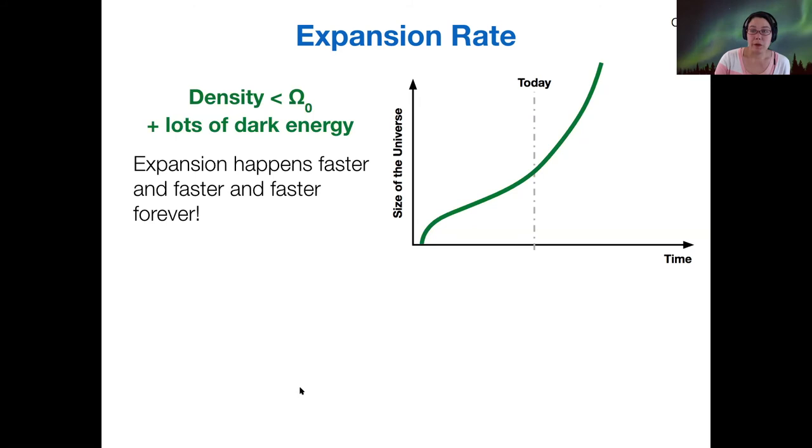And there's one more option, which is kind of a wild and wacky one where you have less than the critical density, but you also have a whole lot of dark energy. And so in this case, the expansion happens not slower and slower and slower forever, but faster and faster and faster forever. And so this universe blows up to an extremely infinite size.